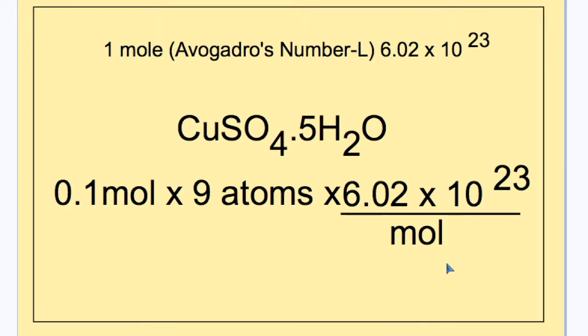And we must bear in mind that there is no calculator available. To solve, we multiply 0.1 by 9 to get 0.9, and then 0.9 multiplied by 6 approximates to 5.4.